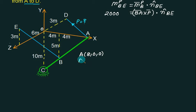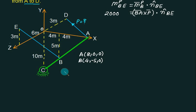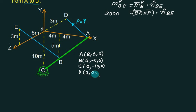For coordinate of B: traveling 4 units along positive x-axis, then 5 units downward (negative y), gives B equals 4, minus 5, 0. Coordinate of C is on the negative y-axis at 10 meters from origin: C equals 0, minus 10, 0. Point D is on the negative z-axis: D equals 0, 0, minus 3.